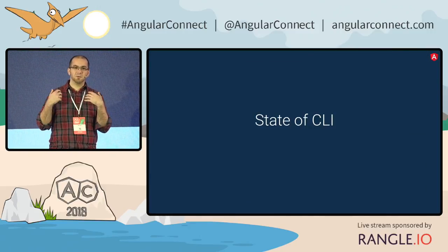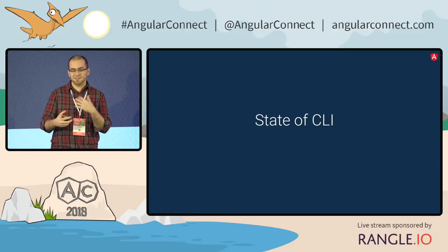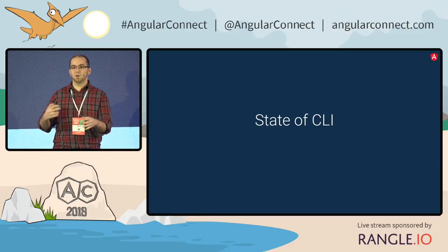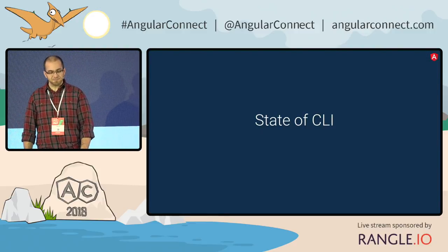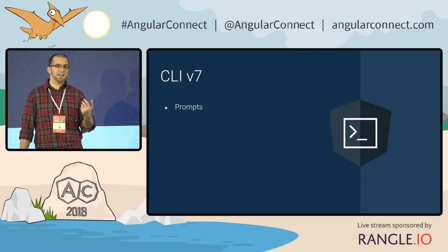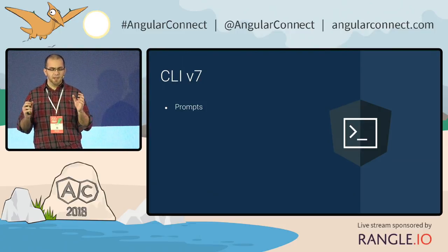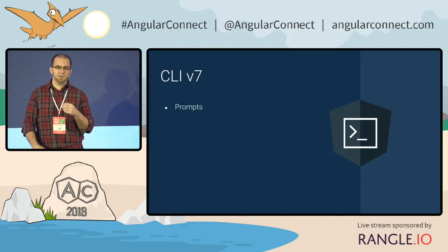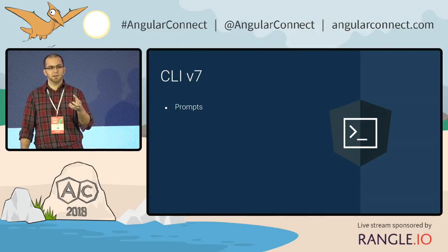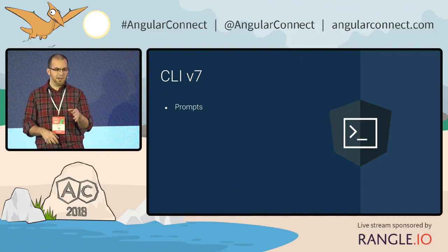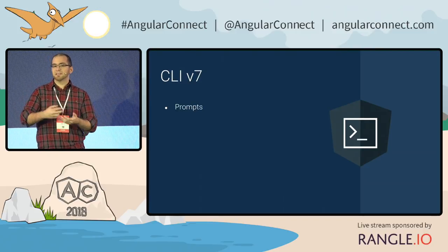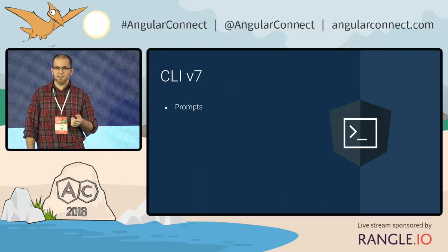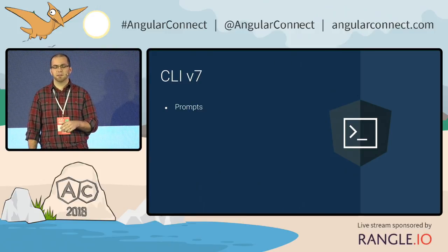I want to give you an overview of what we expect. Sometimes what we're working on and what we want to do next is not very clear, and I want to shed some light. We just released CLI v7, and the main feature that you can probably see in CLI v7 is prompts. If you have a TTY terminal, you can do ng-new without putting in a project name and it will ask you a couple of questions. We think this is a useful feature and I'll expand on it a bit later.